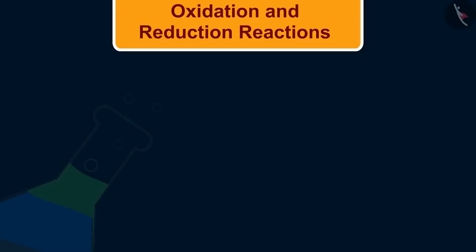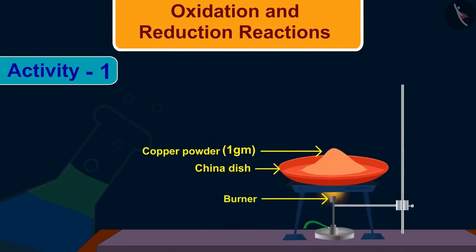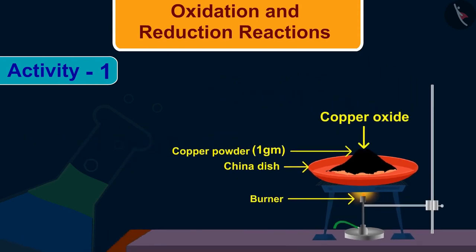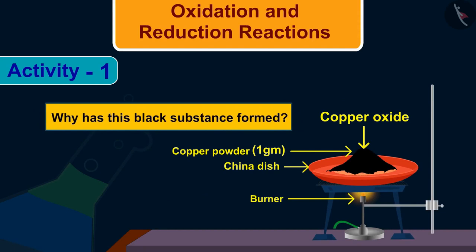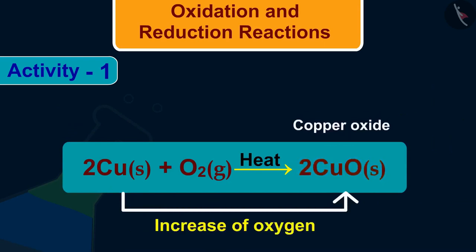Let us understand this with the help of an activity. Heat a china dish containing about 1 gram copper powder. What do you observe? The surface of copper powder becomes coated with black copper oxide. Why has this black substance formed? During the reaction, there is an increase of oxygen in copper.